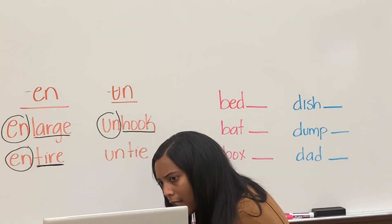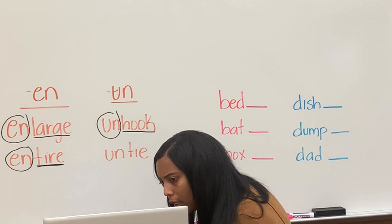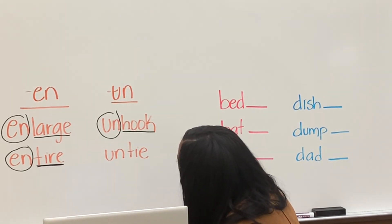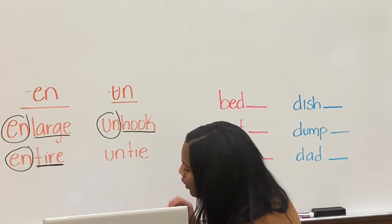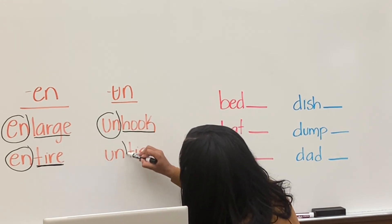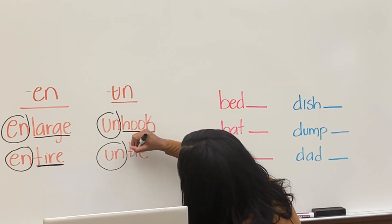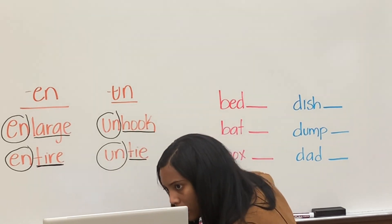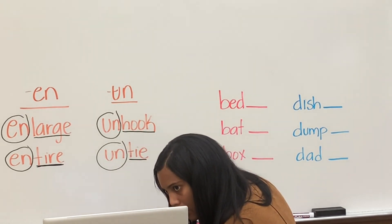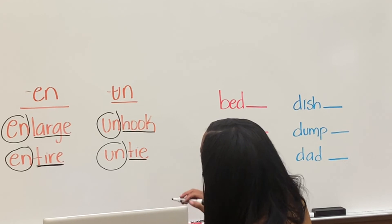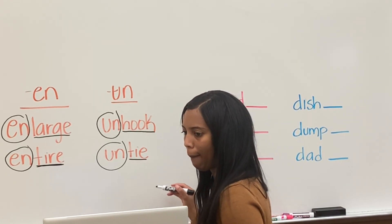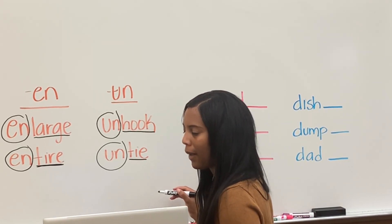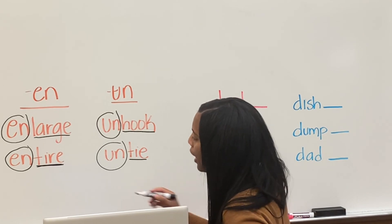And on that last one, Harlem. Circle the prefix, underline the root word. What's the word? Untied. Good job.